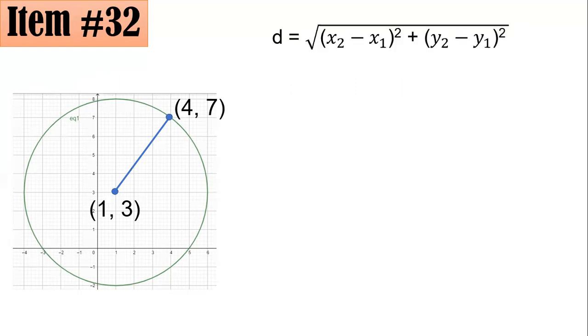To get the length of the radius, we need to utilize the distance formula. We could let this be your (x₁, y₁) and this is your (x₂, y₂). By substitution, you have R, which is your radius, not diameter. The radius equals the square root of (4 - 1)² + (7 - 3)².